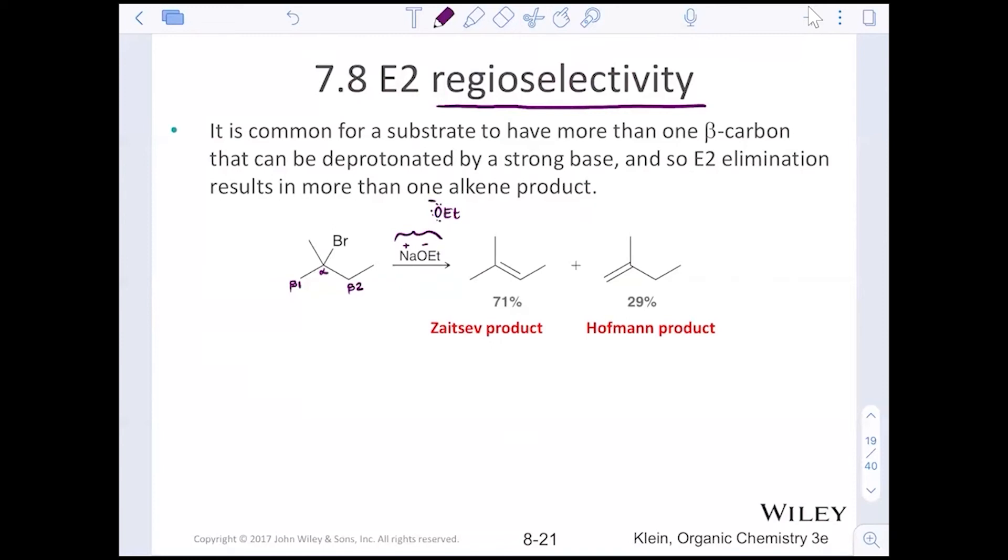Namely what happens when we pull off a hydrogen on beta one. We get the alkene that we see on the right. What happens if we were to pull off a hydrogen on beta two? We get the molecule on the left in the products. Well, how can we predict these values? The more substituted product will be called the Zaitsev product. The less substituted product is called the Hoffman product.